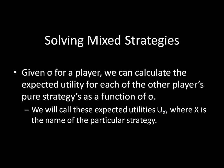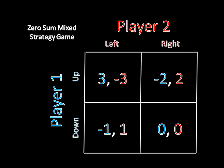Now, given a sigma for a player, we can calculate each of the other player's pure strategies payoffs as a function of sigma. And we will call these expected utilities u of x, where x is the name of the particular strategy. So how does this relate to the game that we're talking about? Well, let's reintroduce the matrix. And note that I've replaced heads and tails with up and down, and left and right, so we can better differentiate between the player's strategies. Now player 1 is playing up or down, and player 2 is choosing between left or right.